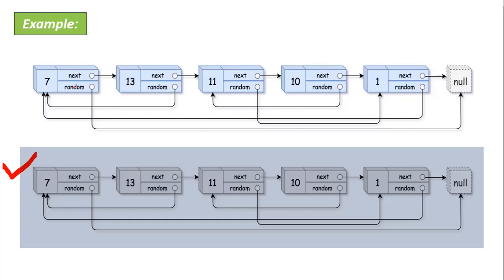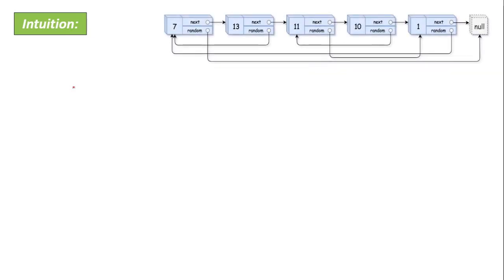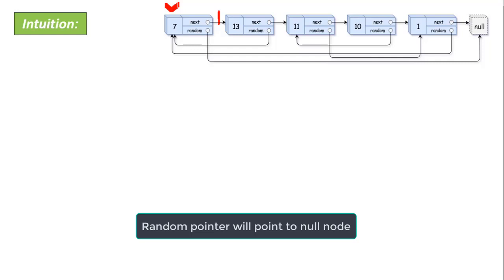So how can we solve this problem? Let me go through the intuition. Let's suppose we're given this linked list. First, what we're going to do is insert a new node of value 7 with the next pointer and random pointer — the random pointer will point to null. We're going to insert it in between node 7 and node 13. The new node will link to node 13, and node 7 will link to the new node. Initially, when a new node is inserted, it will not have a random pointer.